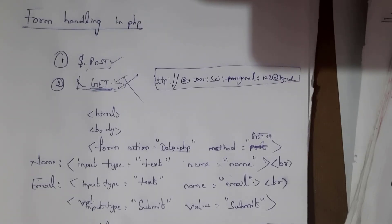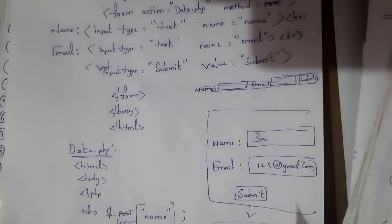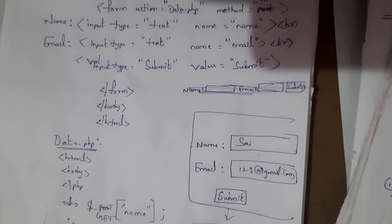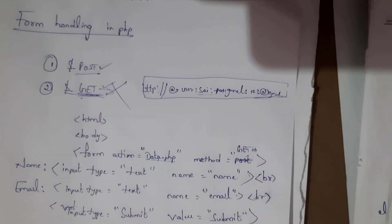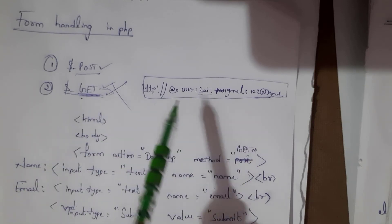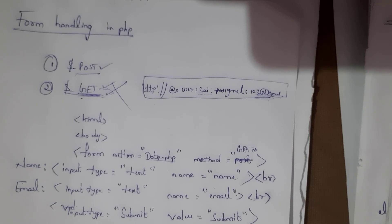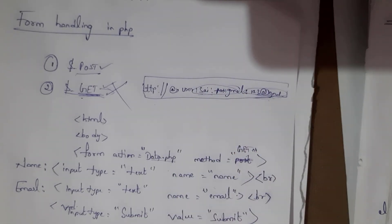What is the difference between GET and POST? In the GET method, whatever data you have entered in the form is displayed on the URL in the browser. For example, the name 'sai' and the email address are visible in the URL after clicking submit. So GET is not secure — if you use it for a password, that password appears in the URL. To overcome this problem we use POST. POST is secure because it does not display the username or password in the URL.